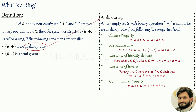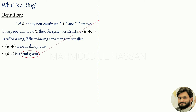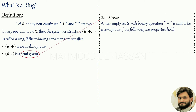Now the second condition is that set R is a semi-group under multiplication. A non-empty set G with a binary operation steric is said to be a semi-group if the following two properties hold: the first is closure property and the second is associative law. So if we have a non-empty set under binary operation steric and these two properties are satisfied, then we have a semi-group. The second ring condition is that set R under the binary operation of multiplication is a semi-group.